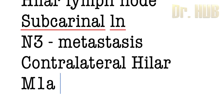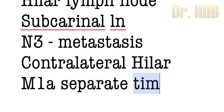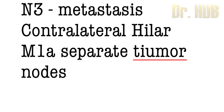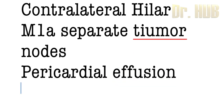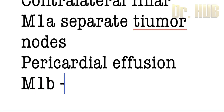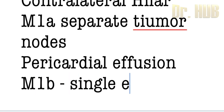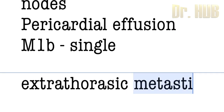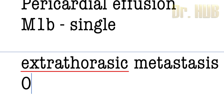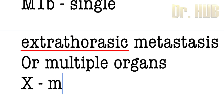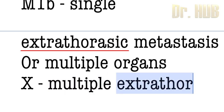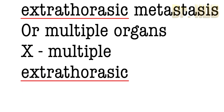M1a represents intrathoracic metastasis, including separate tumor nodules in the contralateral lobe, and tumor with pleural or pericardial nodules, or malignant pleural or pericardial effusion. M1b is a single extrathoracic metastasis in a single or multiple organs. M1c means multiple extrathoracic metastases in a single or multiple organs.